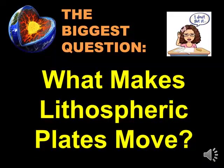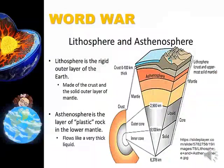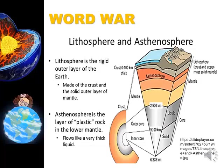As we go on with our discussion, we will be using some special words. The first word war is between lithosphere and asthenosphere. Lithosphere is the rigid outer layer of the Earth, made of the crust and the solid outer layer of the mantle. Asthenosphere is the layer of plastic or flowing rock in the lower mantle. Plastic means it flows like a very thick liquid.